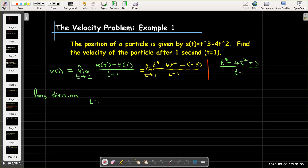So t minus 1 is my divisor. That's being divided into t cubed minus 4t squared plus 3. And if we remember the steps here for long division, our first step is to get an approximation. I take the leading term in each one. I divide t cubed divided by t. That's going to give me t squared.